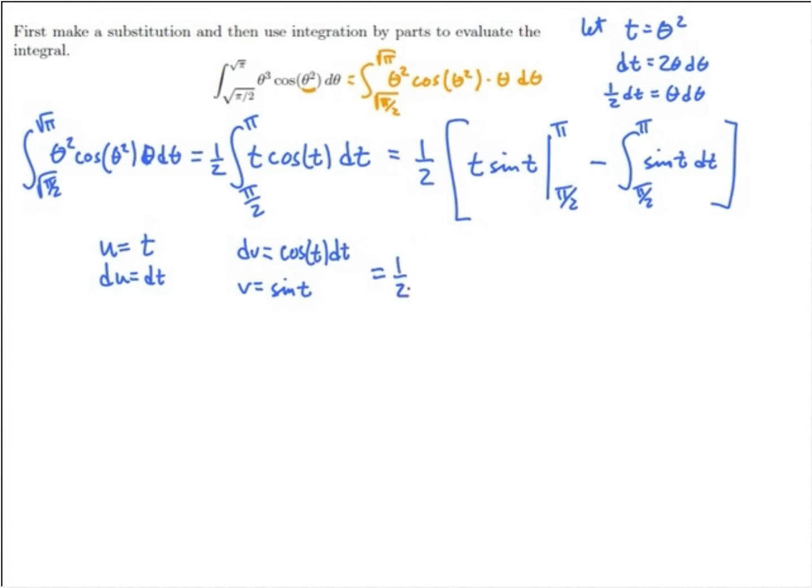So this is one-half times, let's see, I evaluate at pi, so pi sine of pi, minus pi over 2 sine of pi over 2, minus, the anti-derivative of sine is negative cosine, so it becomes positive cosine of t evaluated at end points.